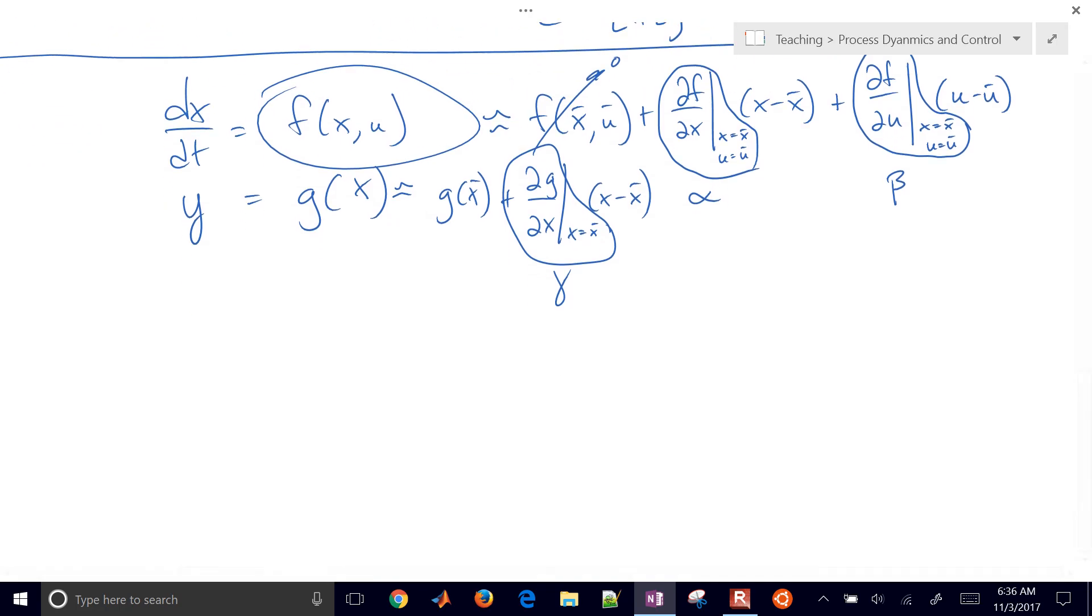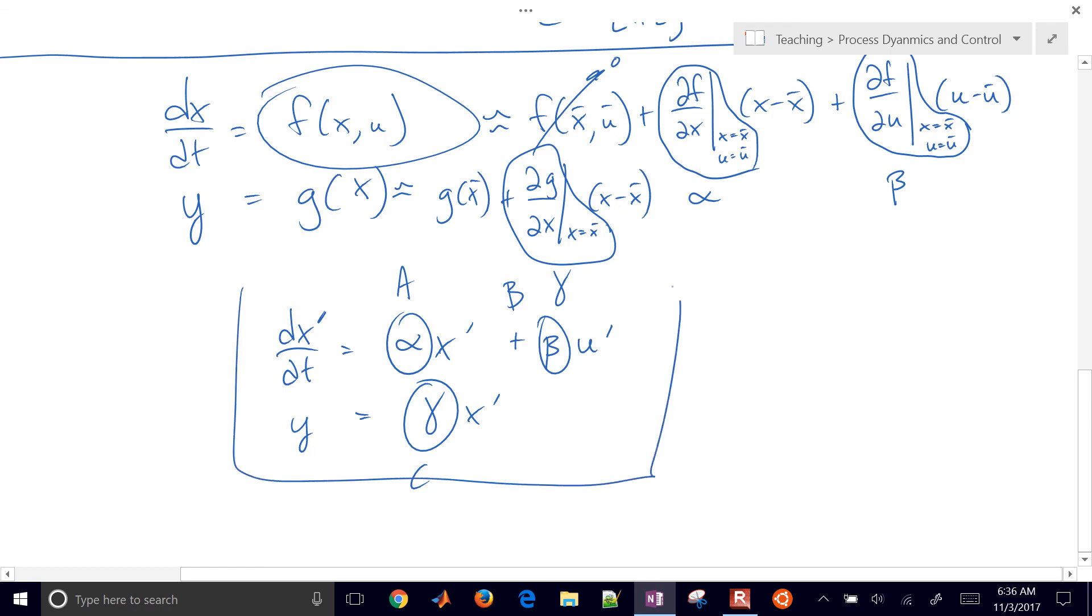So in state space form then, it would come up with something like this, where we would have alpha times X. I'll call that X prime for deviation variable. I'm in deviation variable form, plus beta times U prime. And then I'll have Y equals gamma times X prime. So this would be my A matrix, this would be my B matrix, and that would be my C matrix. So I've translated any general nonlinear system into state space form. And if you have additional states there, you can just take the partial derivative with respect to those states or those additional inputs.